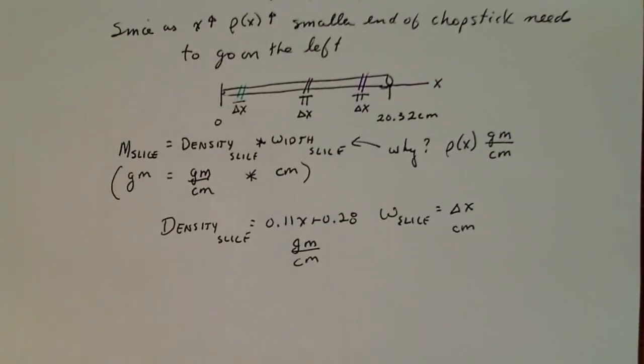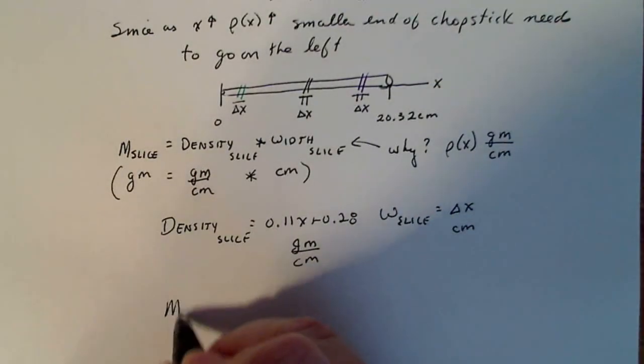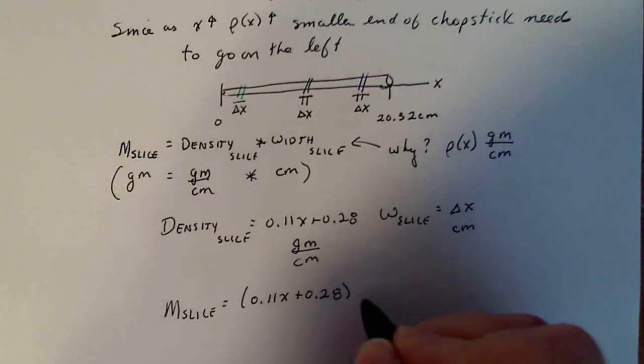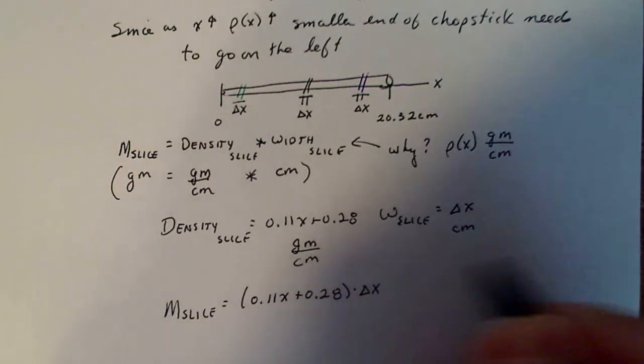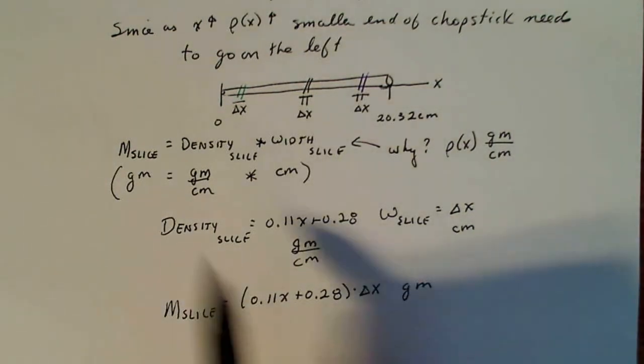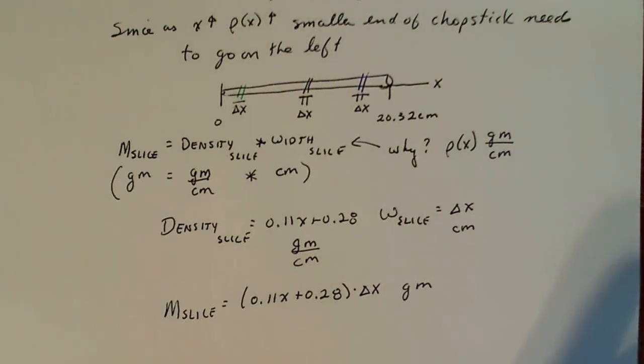Now, if I want just the mass on the slice, I'm going to multiply density times width and that gives me grams in the end. Now that's just the mass on just that one single slice or any of these single slices. You always worry about the slice - just one slice, focus on it. Calculate the thing that you're supposed to calculate on the slice, and then you worry about setting up the integral.